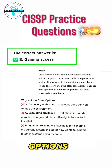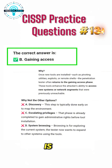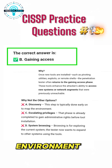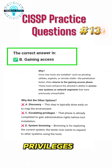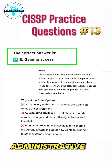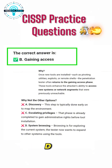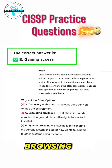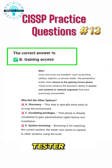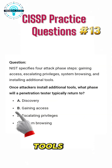Why not the other options? A. Discovery — this step is typically done early on to map the environment. C. Escalating privileges — that phase is already completed to gain administrative rights before tool installation. D. System browsing — browsing is for exploring the current system, whereas the tester now wants to expand to other systems using the tools.